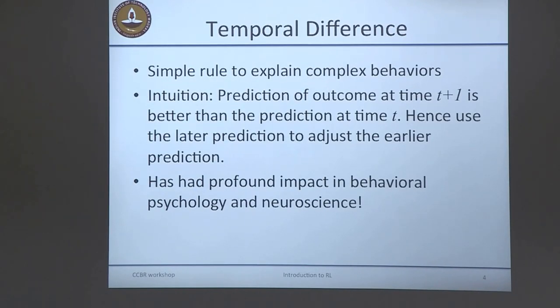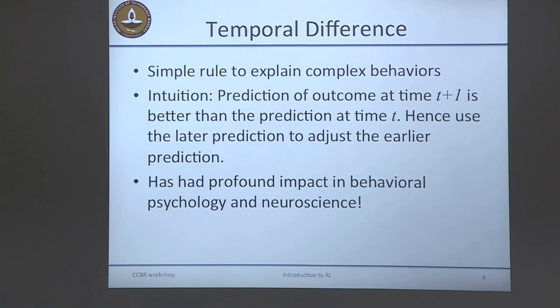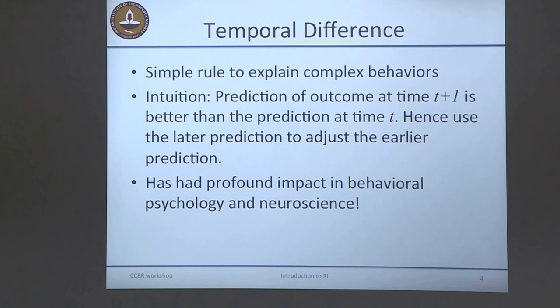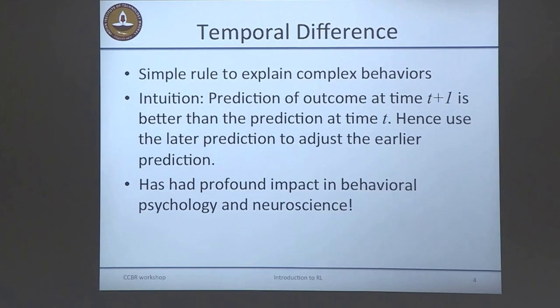Nobody teaches you how to cycle — you have to get on a bike, make mistakes, fall down, and learn how to stay balanced. Reinforcement learning encapsulates this trial-and-error mechanism and provides algorithmic ways of doing it. We heard a lot about temporal difference learning — a simple rule that can explain complex behaviors. The intuition is that the prediction of an outcome at time t+1 is better than the prediction at time t, so you use the later prediction to update your current prediction. That's what TD learning does, and it has profound impact in behavioral psychology and neuroscience.